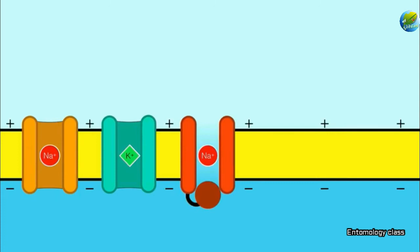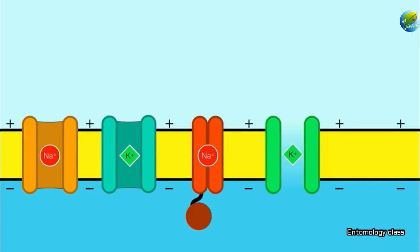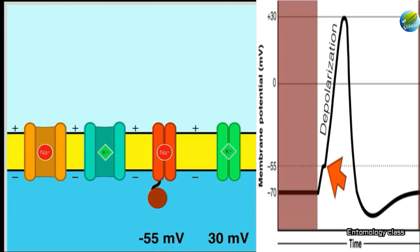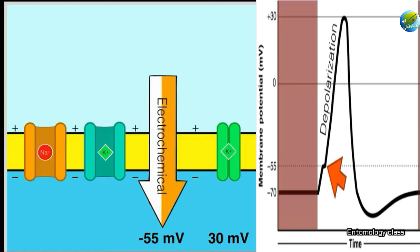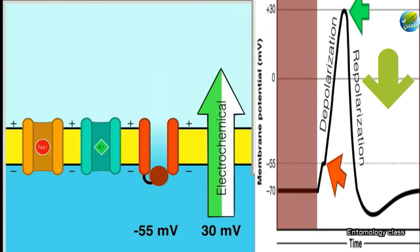There is also another voltage-gated channel — the potassium voltage-gated channel — which opens when the voltage reaches around plus 30 millivolts, allowing only potassium outside. So, once we hit minus 55 millivolts, all the sodium voltage-gated channels open wide and allow sodium ions inside. The depolarization of the neuron happens and the voltage increases. When we reach plus 30 millivolts, the voltage-gated potassium channels get activated and the sodium channels are inactivated, leading to repolarization.